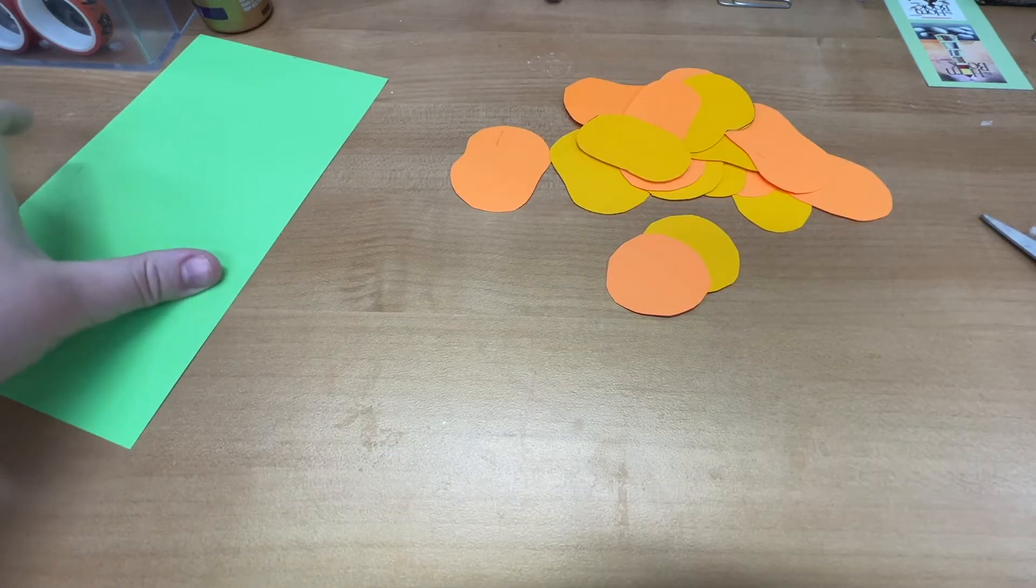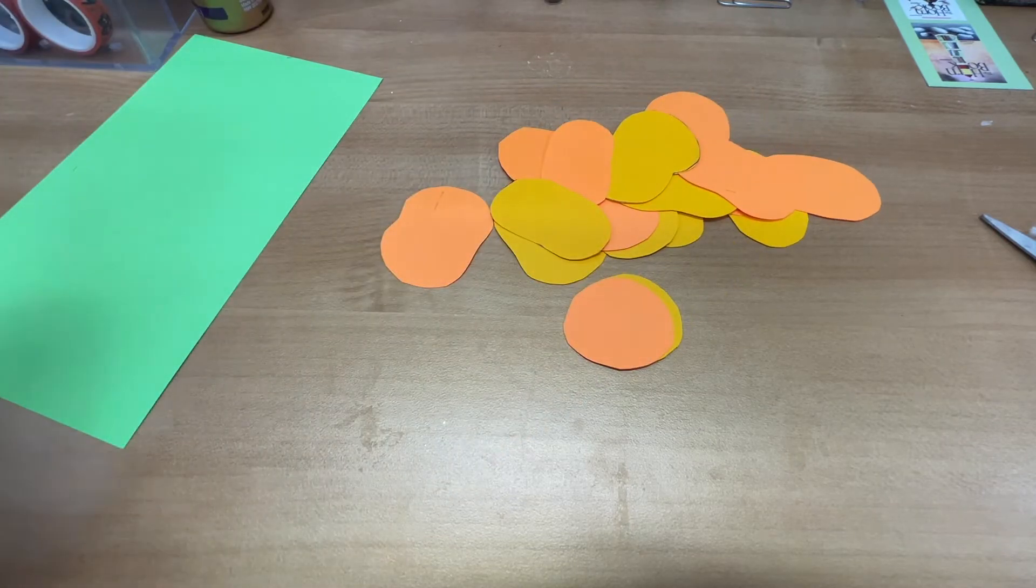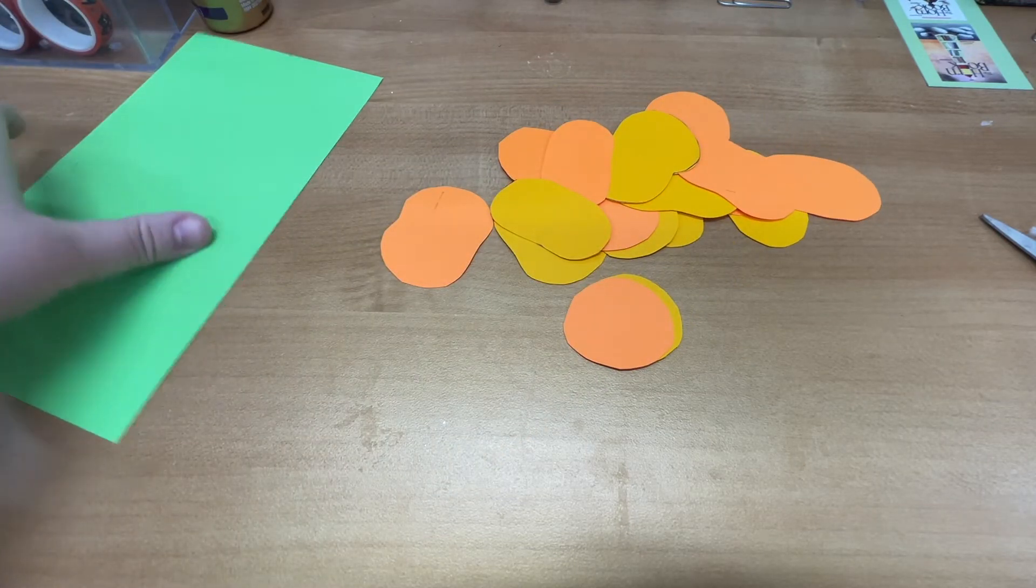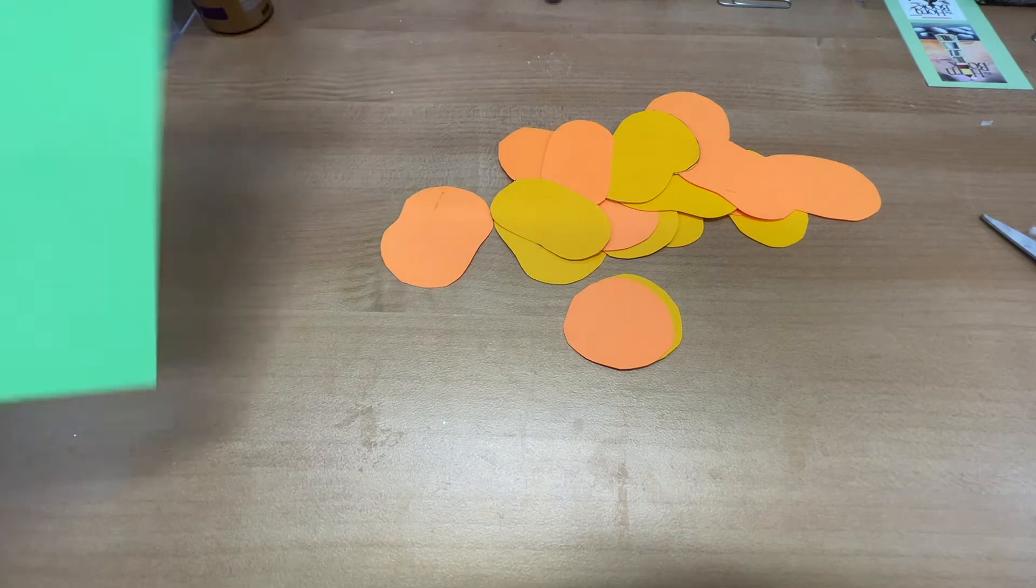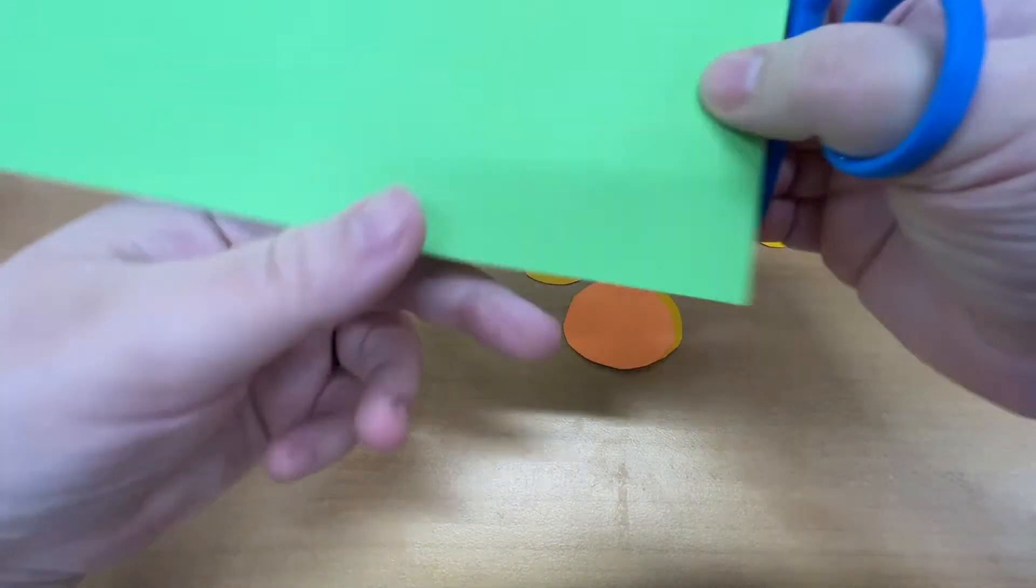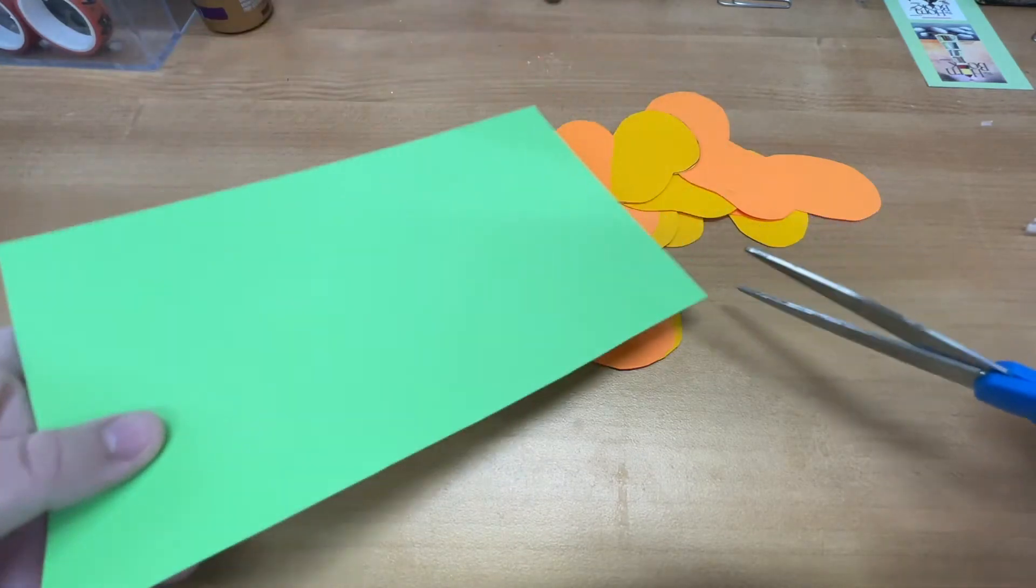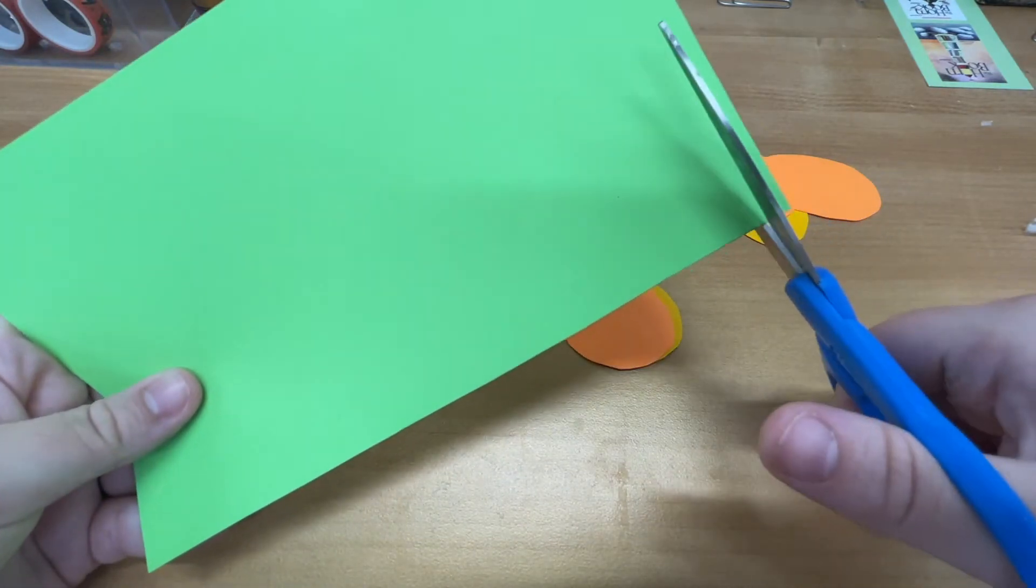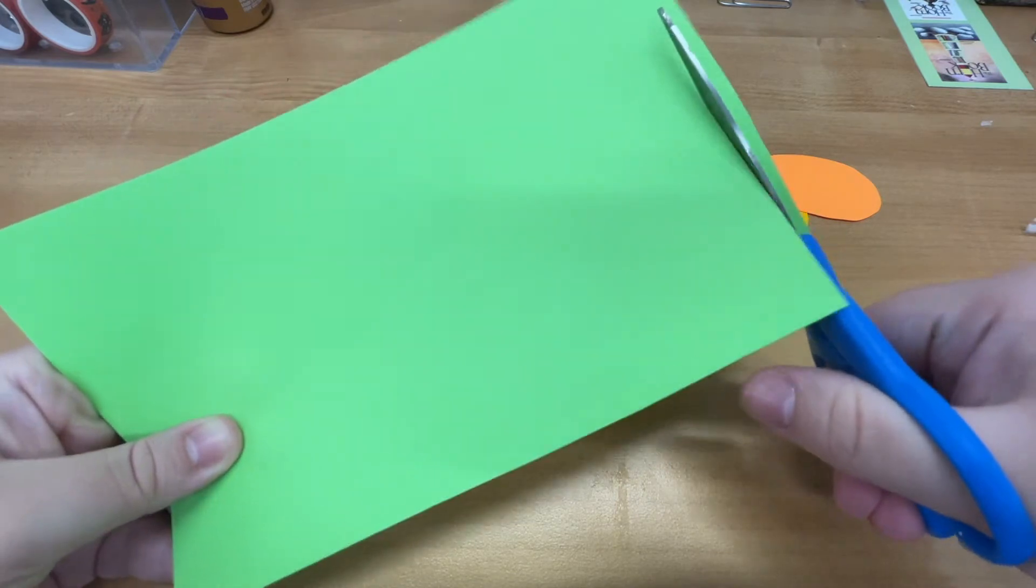Now that I have my pumpkins cut out, I counted them. I have 18. It doesn't matter how many you have. It's really however big you want your garland to be. Then I start cutting out some stems. I like to do maybe like a quarter of an inch strips.